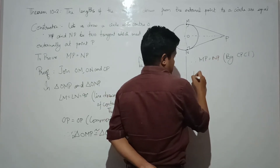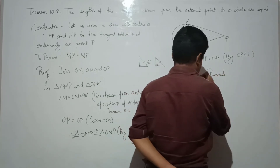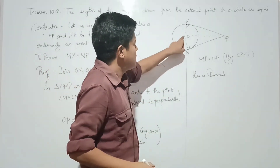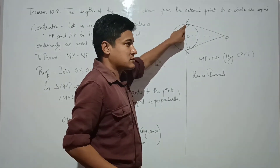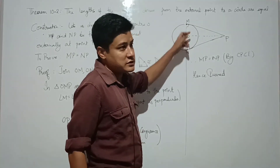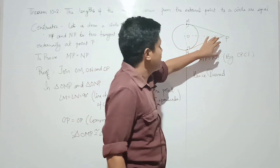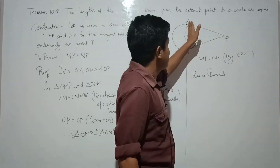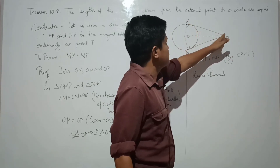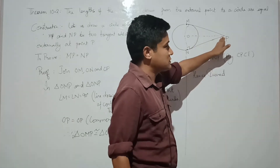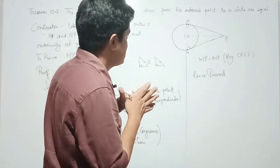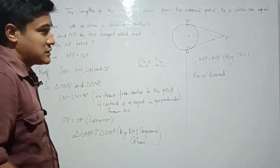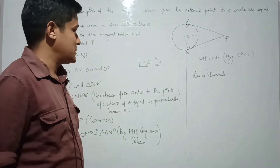Hence proved. Theorem 10.1 states that the radius to the point of contact of a tangent is perpendicular, and this is applied here to get 90 degrees. So, MP equals to NP — the two tangents from the external point are equal. Hence proved. Now we will go to the exercise part. Thank you.